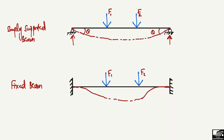Let's understand why we don't have any deflection at these end points. It is because the fixed supports create a moment in the anti-clockwise direction at one end and a moment in the clockwise direction at the other end. When the load tries to deflect the beam, the supports create a moment in the opposite direction and resist that deflection, which is why we have zero slope at the ends.